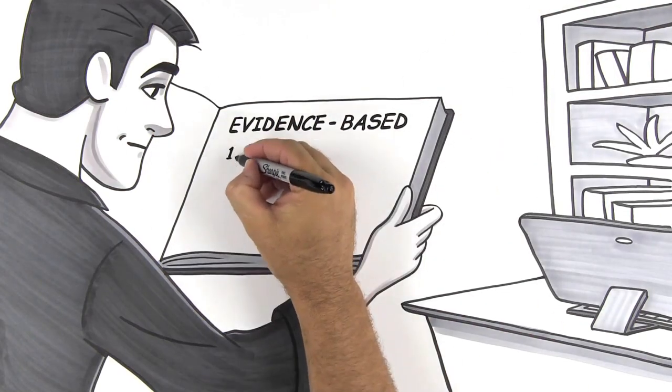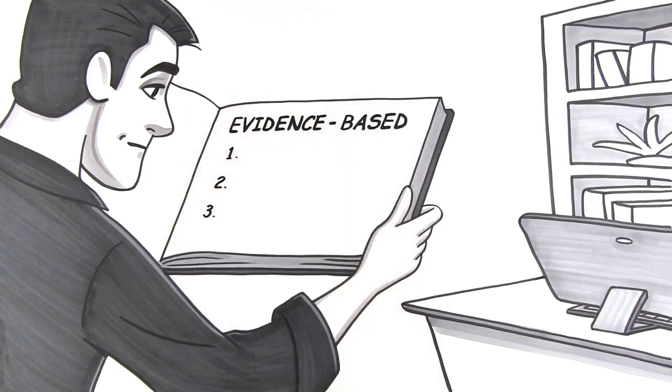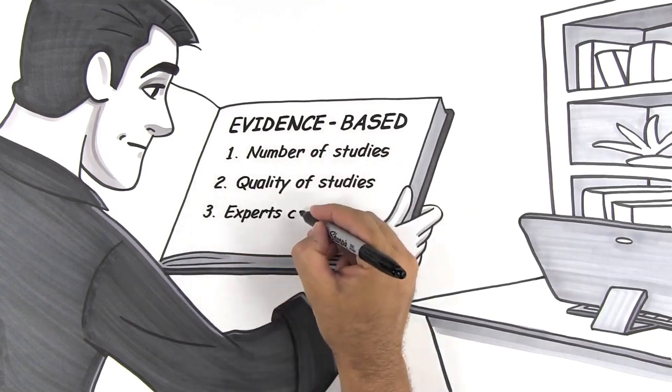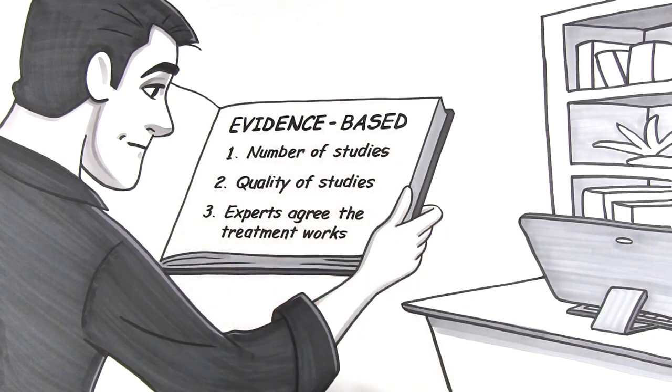In general, the scientific community looks at three things: the number of research studies, the quality of those studies, and whether experts agree the treatment works. Let's learn more.